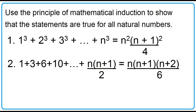Use the principle of mathematical induction to show that the statement 1 plus 3 plus 6 plus 10 plus dot dot dot plus n times the quantity n plus 1, all over 2, is equal to n times the quantity n plus 1 times the quantity n plus 2, all over 6.